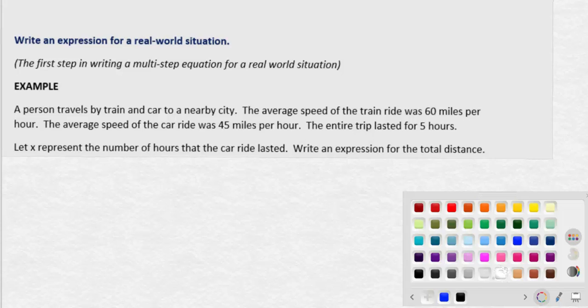For example, suppose that we're told a person travels by train and car, and the average speed of the train ride is 60 mph, while the average speed of the car ride is 45 mph. We know that the entire trip lasted for 5 hours. If we let x represent the number of hours that the car ride lasted, how could we write an expression for the total distance?